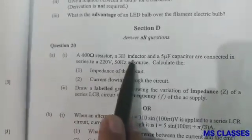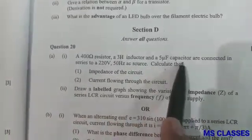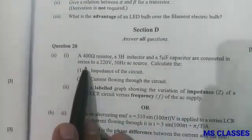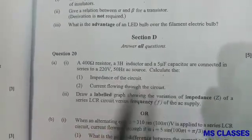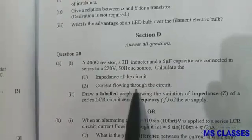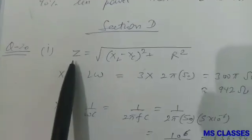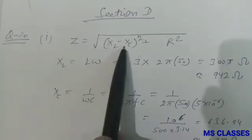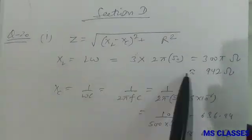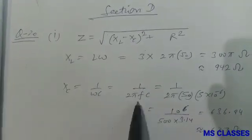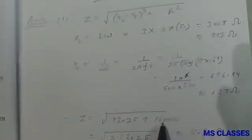Section D, Question 20, first part: A 400 ohm resistor, 3 henry inductor and 5 microfarad capacitor are connected in series to a 220 volt 50 hertz AC source. Calculate the impedance and the current flowing through the circuit. So here as we know that Z is under root XL minus XC square plus R square, where XL is L omega and XC is 1 by omega C. So if you put these two values and the value of R which is 400 ohm in the formula you get 503 ohm.